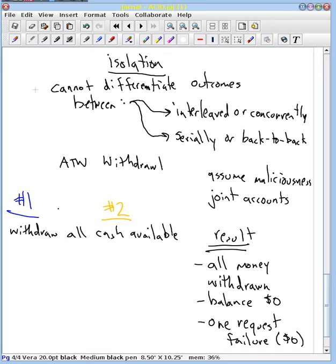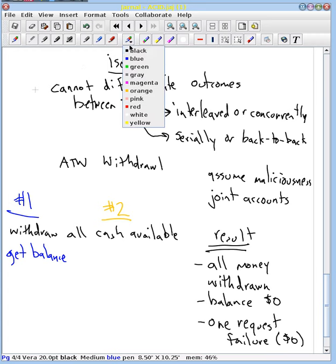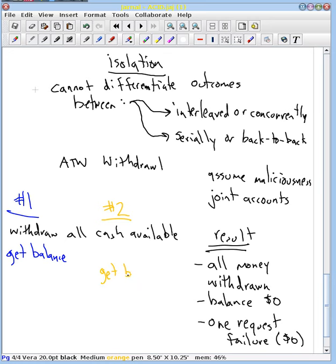Now if we do not have isolation and they are running concurrently we could get this kind of situation. At ATM number one we say get balance. And let's say it takes a while to send that request between the ATM and the bank. And so it takes a while.